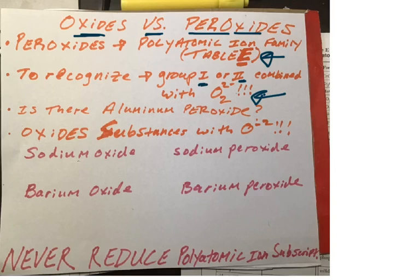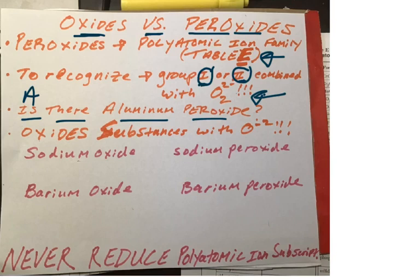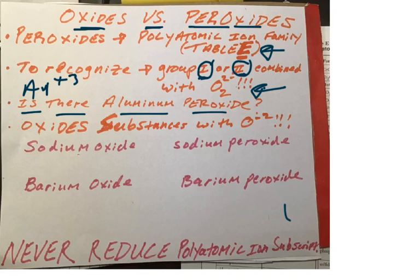Is there aluminum peroxide? It's not a trick question, but you can't have aluminum peroxide — because aluminum doesn't belong to group one or group two. Now, can you have aluminum oxide? Absolutely, because you have Al, which is plus three, and you have oxide, which is O minus two. When you crisscross, you're going to get Al₂O₃ as aluminum oxide.